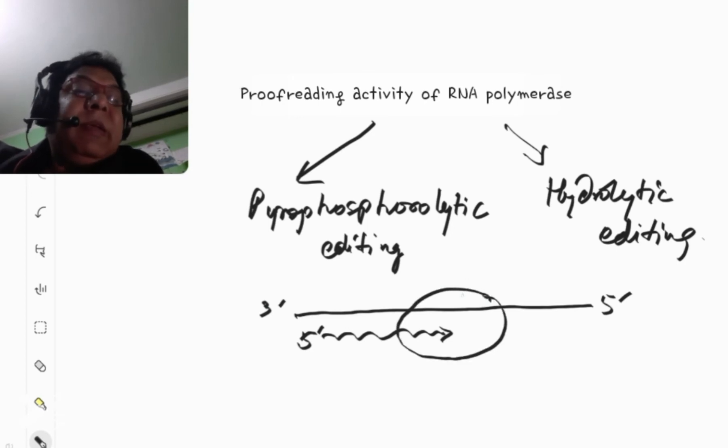And say, there is a T residue over here, and now the RNA polymerase is going to insert an A residue, but by mistake it is incorporating a G, it has incorporated a G residue over here. So, G cannot be against T. There should be an A over there, but it is an incorrect insertion.